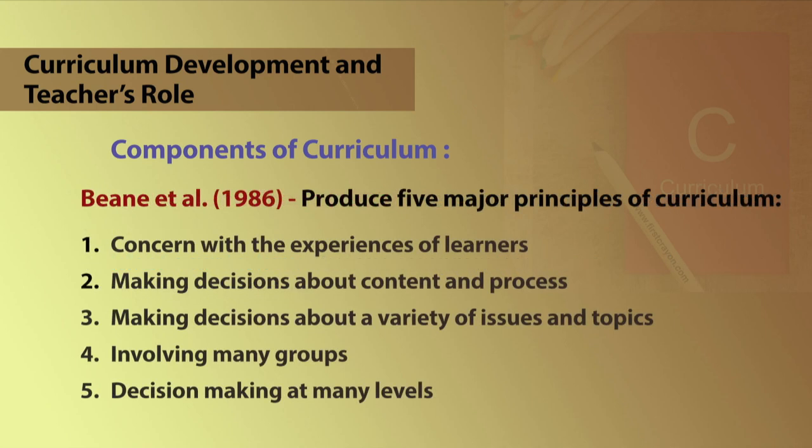Bin proposes five major principles of curriculum. Number one, concern with the experiences of learners. Two, making decisions about content and process. Number three, making decisions about a variety of issues and topics. Number four, involving many groups. Number five, decision making at many levels. These authors have a conception of curriculum, perhaps a combination of student-centered and society-centered approaches.